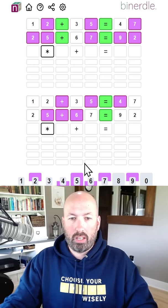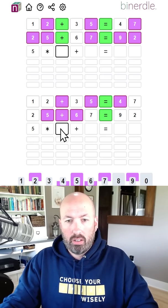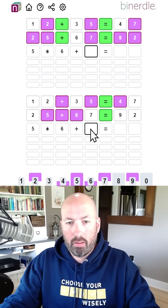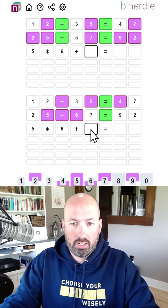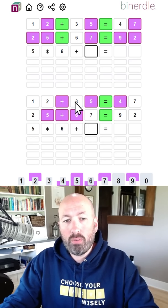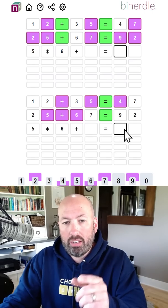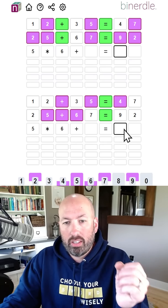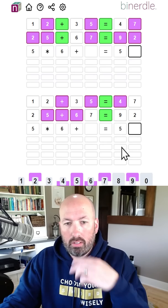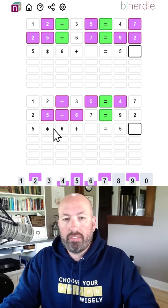We could do something like five times six, which is 30, plus... Now we don't have a one, two, three, or four though. And the four can't be here. So the answer has to be at least in the 50s. So five times six won't work.